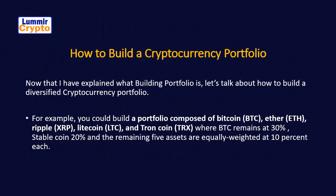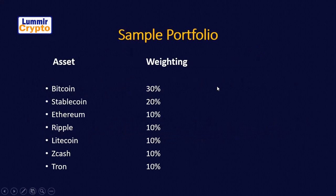Now that I've explained what building a portfolio is, let's talk about how to build a diversified cryptocurrency portfolio. For example, you could build a portfolio with bitcoin at 30%, stablecoin at 20%, and the remaining five assets — ethereum, ripple, litecoin, tron — each at 10%. Stablecoins are coins that don't move; they remain at their price with no increase or decrease. I've prepared a sample portfolio to explain this better — a portfolio comprising seven coins.